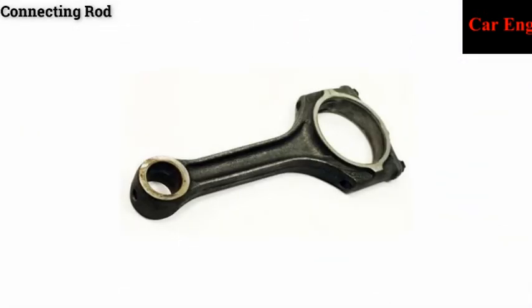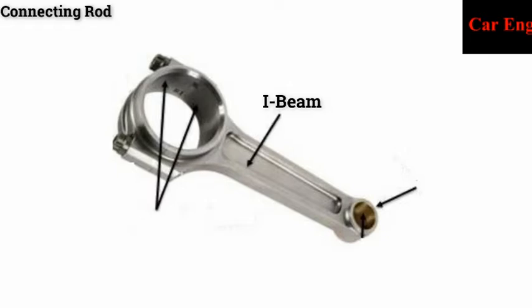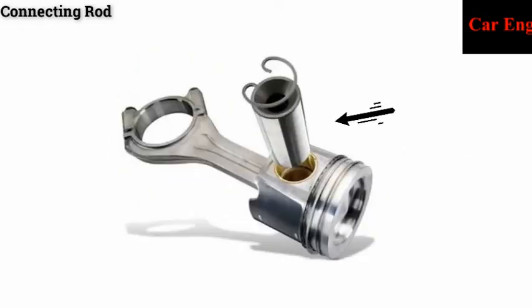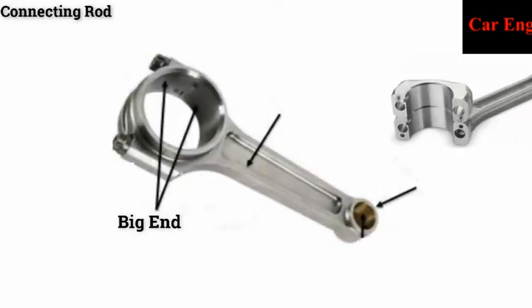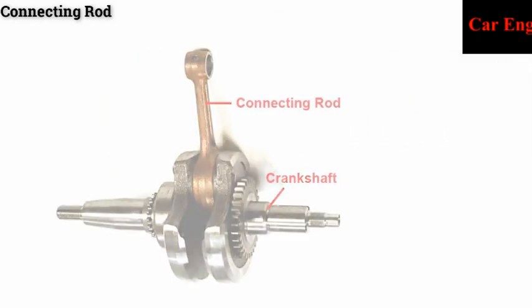A connecting rod in an IC engine must be light and strong enough to withstand stress and twisting forces. It usually has an I-beam cross-section and is made of alloy steel or duralumin by drop forging. The small end of the connecting rod has either a solid eye used to connect the piston by the piston pin. The big end of the connecting rod is always split and is used to connect the crank pin of the crankshaft.